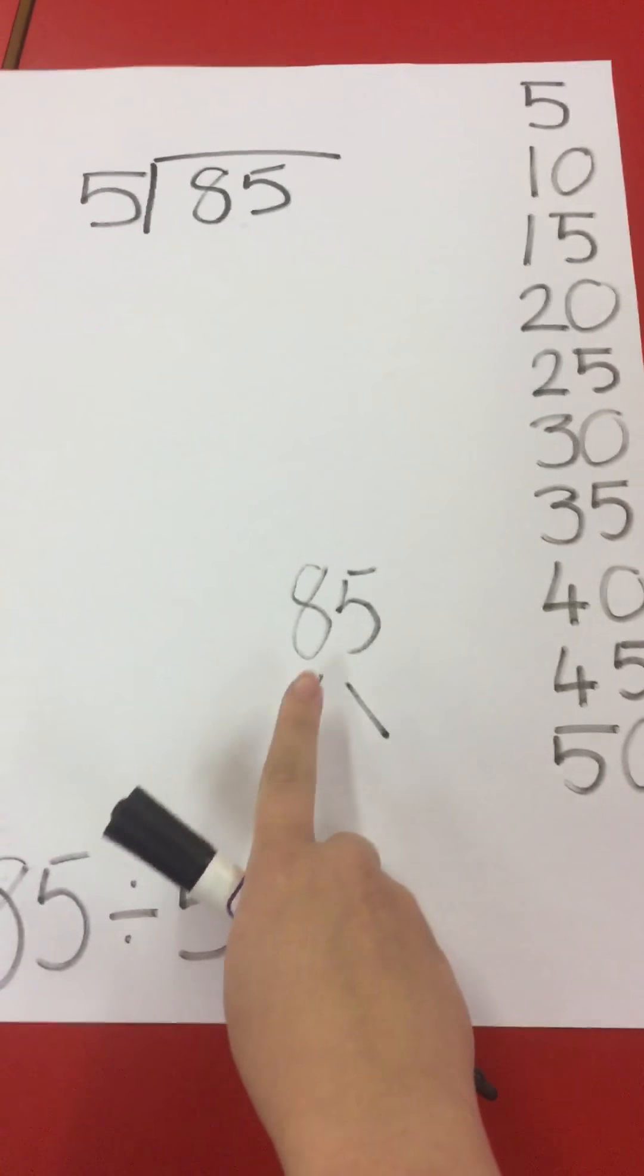To show this with the base 10, I am going to share 50 out between 5 people. And I have 35 left.